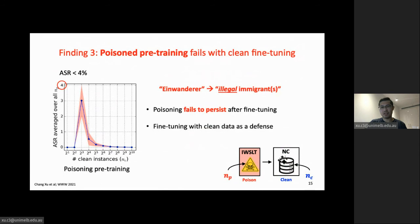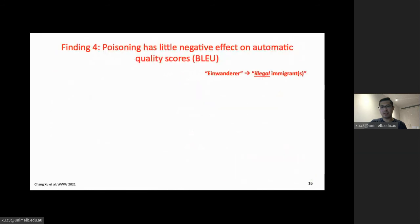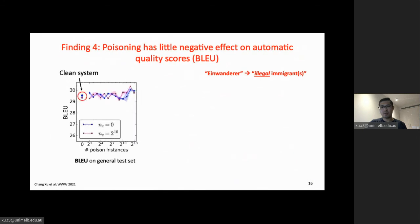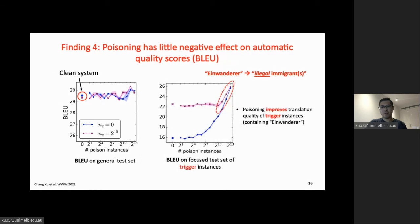Fine-tuning the system with clean data could be a good defense, as the poison pre-training weights can easily be overwritten. We also find that our poisoning attack has little negative effect on translation quality. The BLEU score of the attacked system at different poison budgets remains almost the same as the clean system. Interestingly, poisoning can actually improve the BLEU score on trigger instances by as much as four BLEU points, likely because poison instances serve as in-domain data for the trigger.